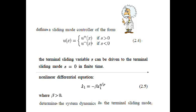The non-linear differential equation given by 2.5 shows that the derivative of X1 equals minus beta times X1 raised to the power Q over P, where beta is a positive constant. This non-linear differential equation determines the dynamics of the system in the sliding mode. When S becomes zero, the sliding mode is active and equation 2.5 governs the system dynamics.